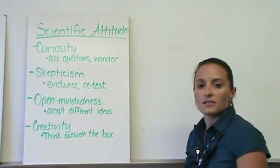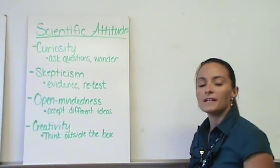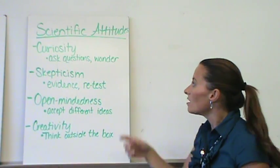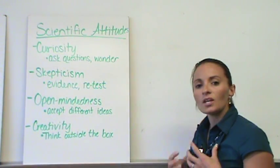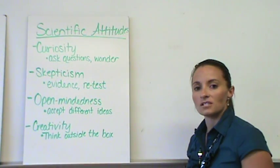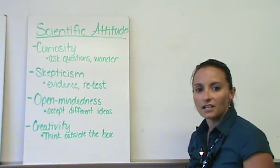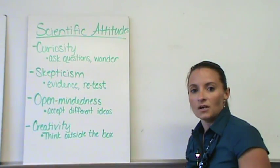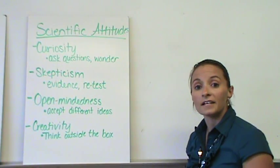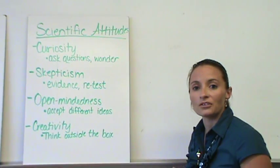So to take a look at the scientific attitudes, there are four scientific attitudes that you have to take when looking at projects, when looking at information. The first one is curiosity. You need to be able to ask those questions. You need to wonder about things in the world. If you don't have that wonder, then you're not going to have the questions, which means you're not going to have experiments to complete and to try to find answers to. So curiosity is a big piece.